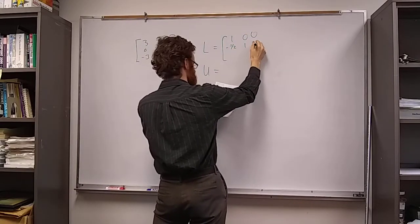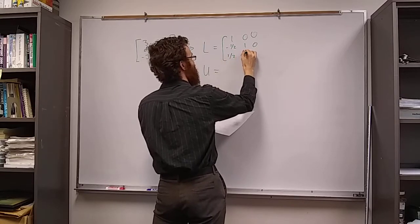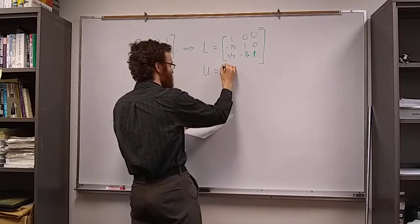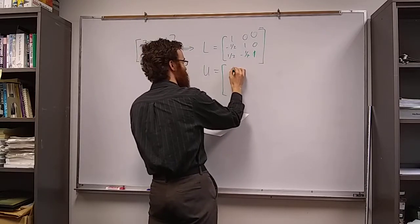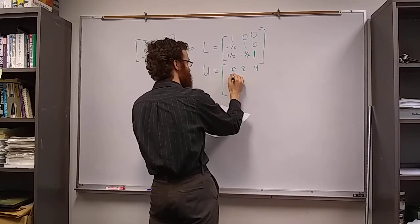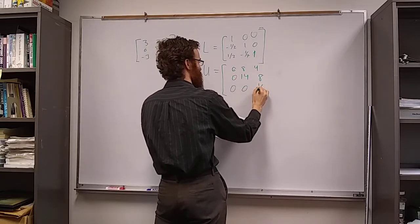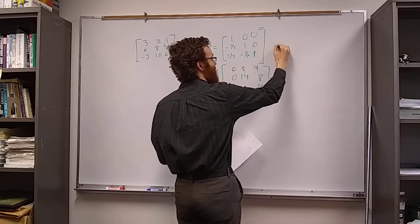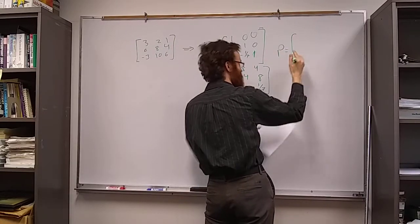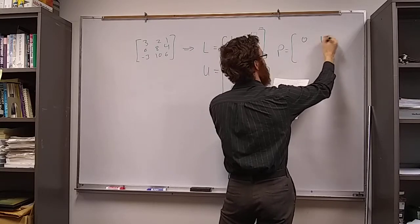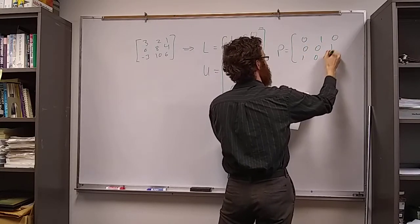1/2, 1, 0, 1/2, negative 1/7, 1. U is 6, 8, 4, 0, 14, 8, 0, 0, 17. And the permutation matrix P was 0, 1, 0, 0, 0, 1, 1, 0, 0.